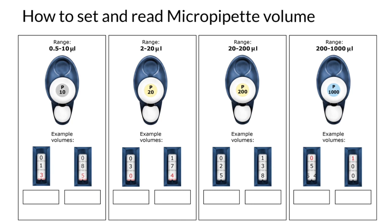P200, you can work with up to 200 microliters with this micropipette and the range is between 20 and 200. And P1000, you use if you want to work with volume between 200 and 1000 microliters.